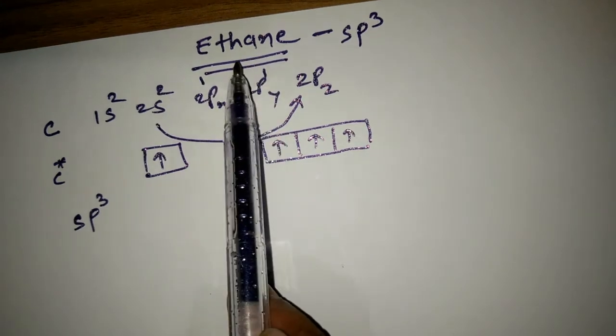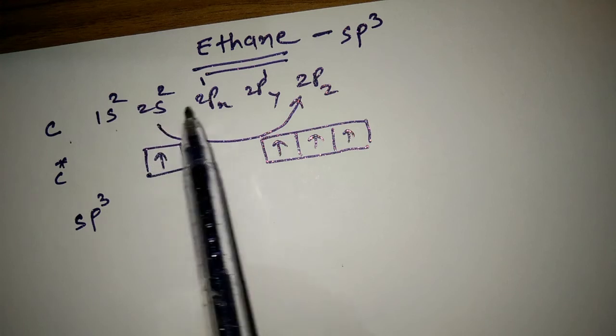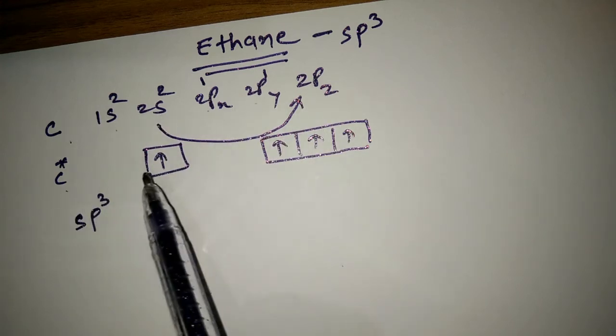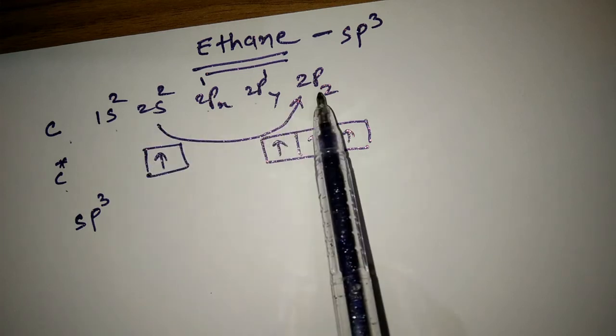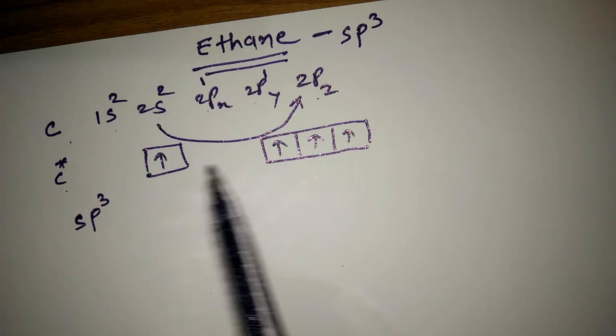Hybridization in ethane. sp3 hybridization. Carbon: 1s2, 2s2, 2px1, 2py1, 2pz0. In excited state, 2s electron shifts into 2pz. There are four unpaired electrons.